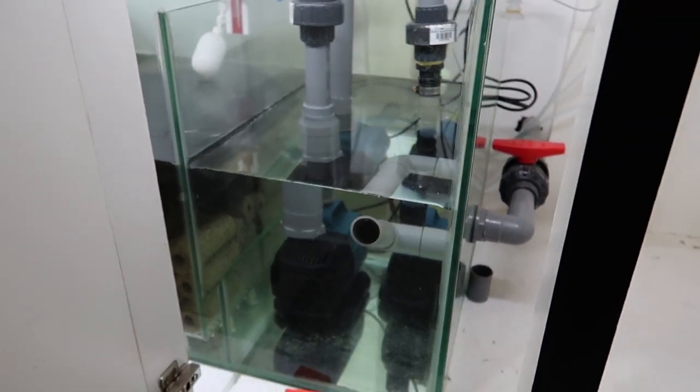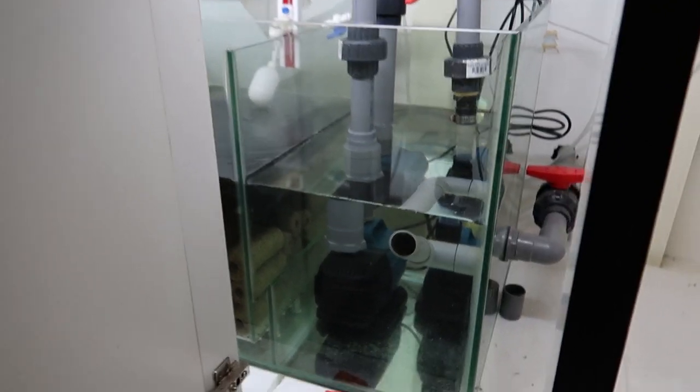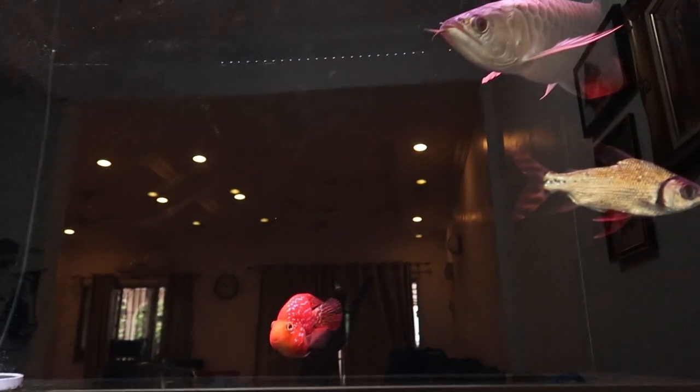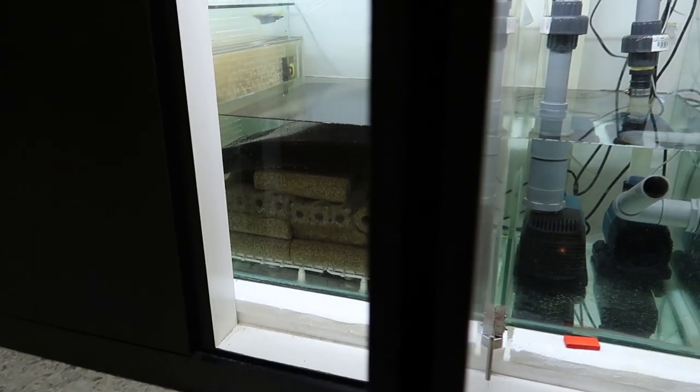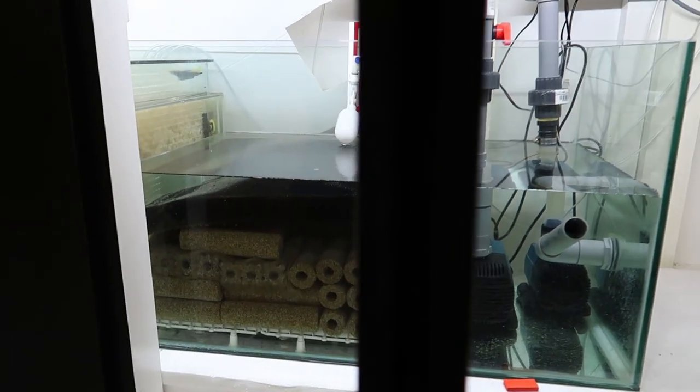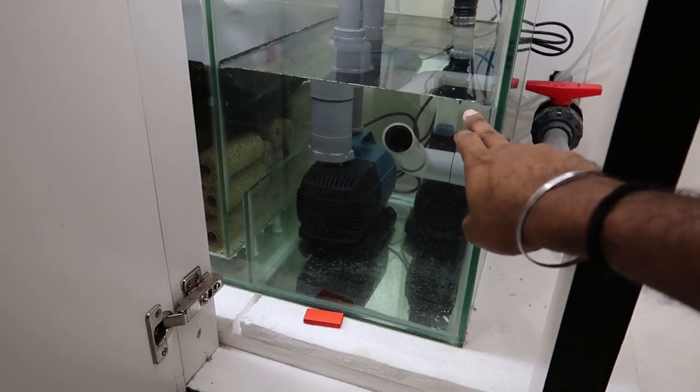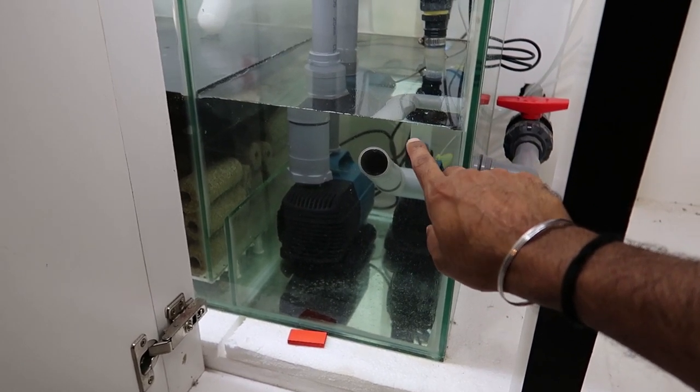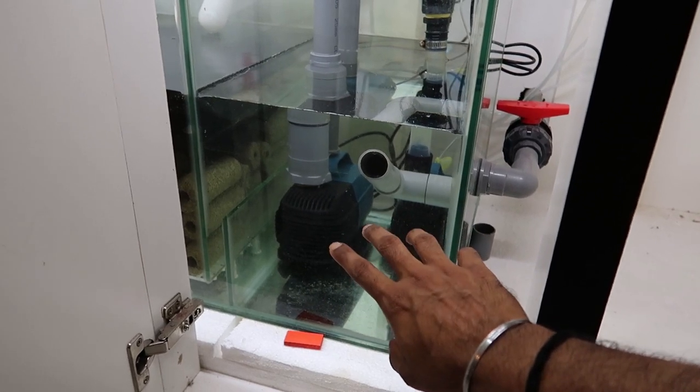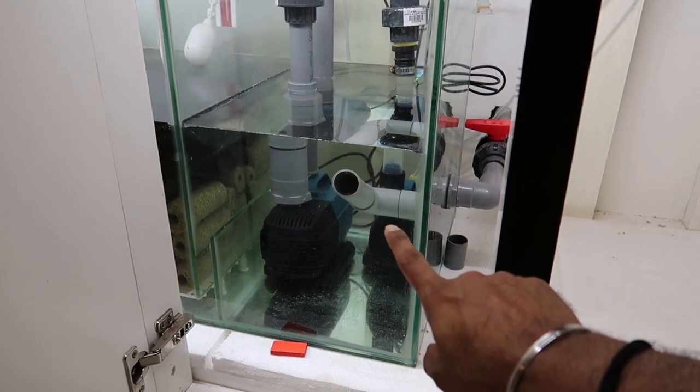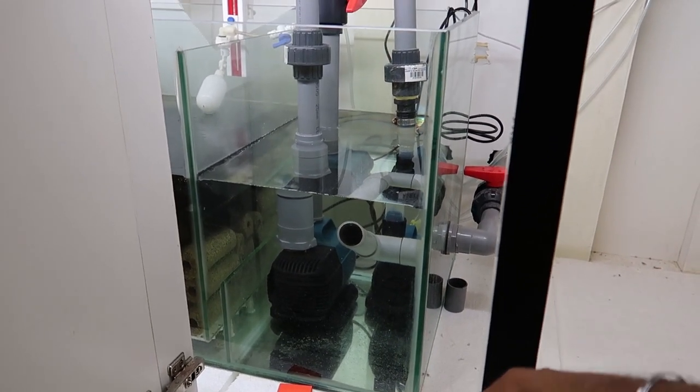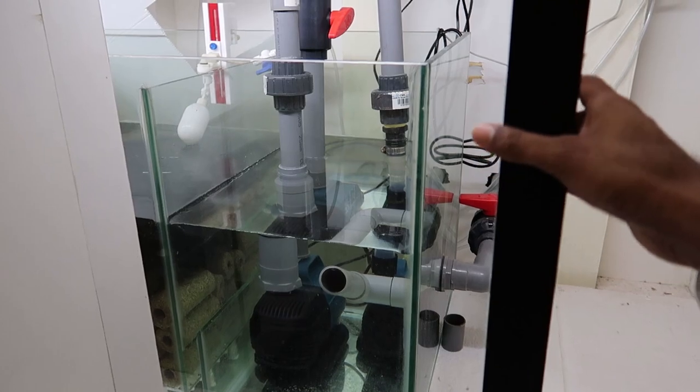The right way to start up your sump system is make sure your main tank is fully filled with water, and then your sump tank is fully filled with water at the level that you desire. So this is the level I desire—this is my maximum level of tank when the pump is switched off, not when the pump is switched on. After that, once you're done with it, then you can turn on your pump.